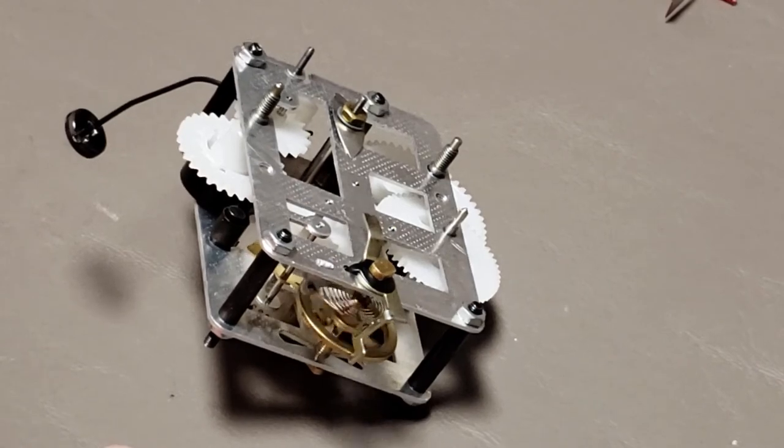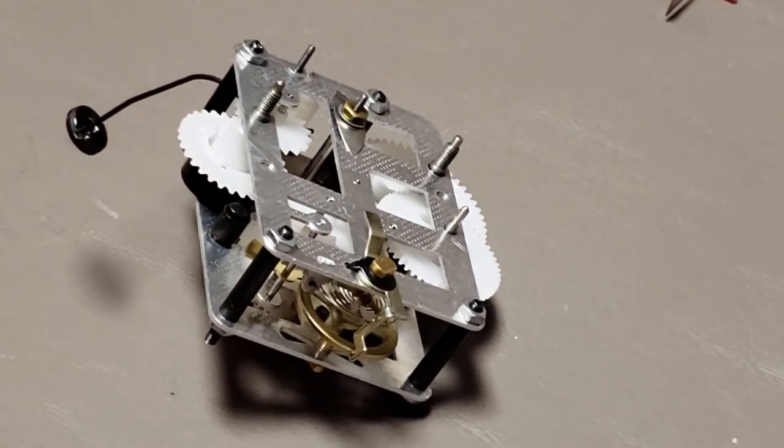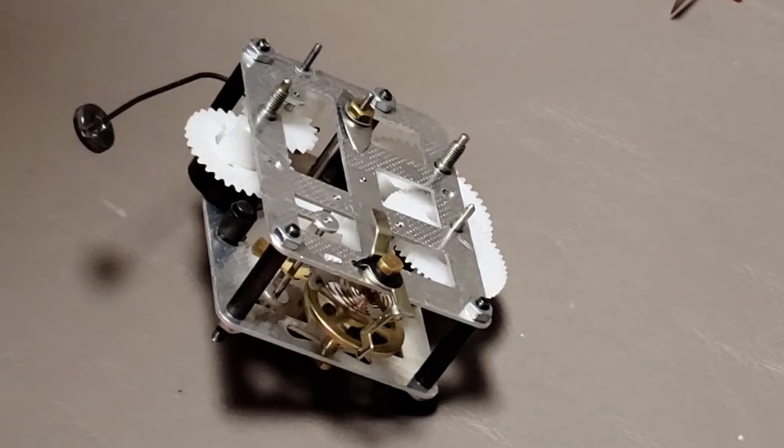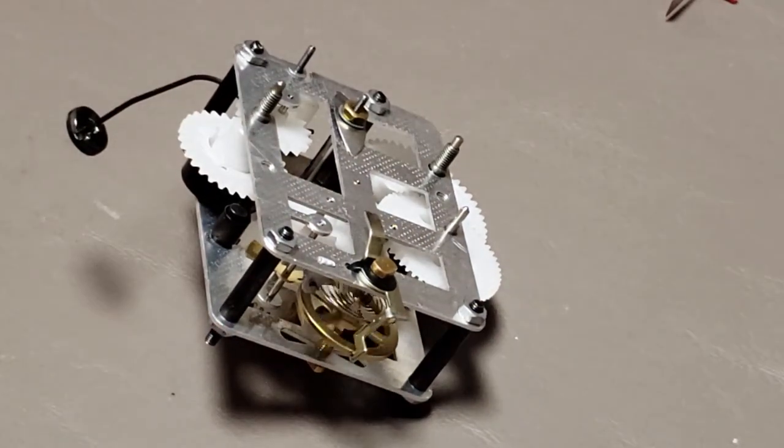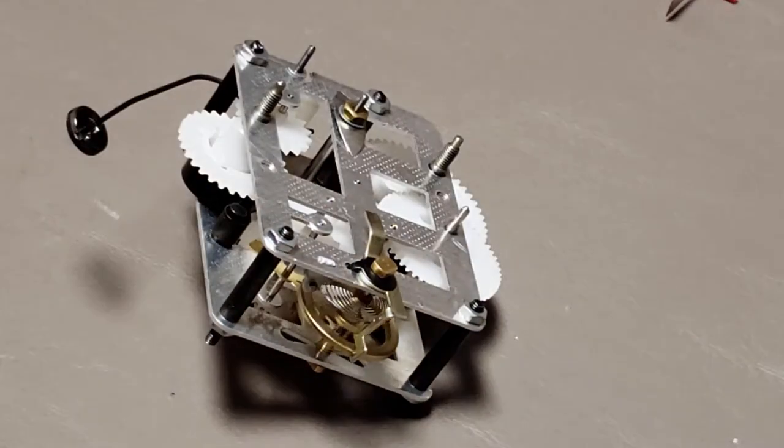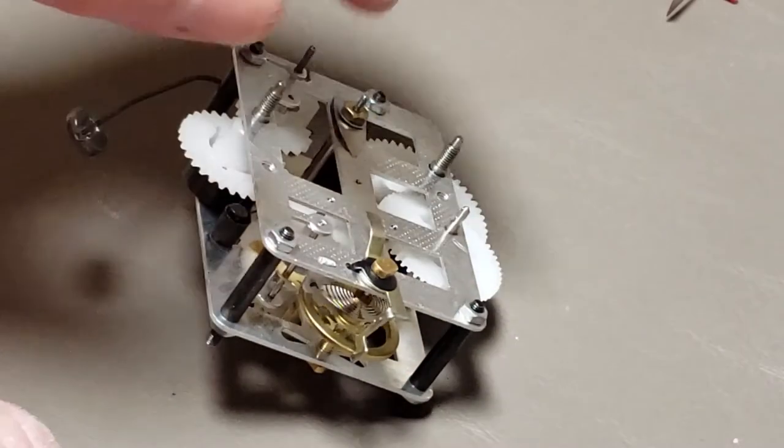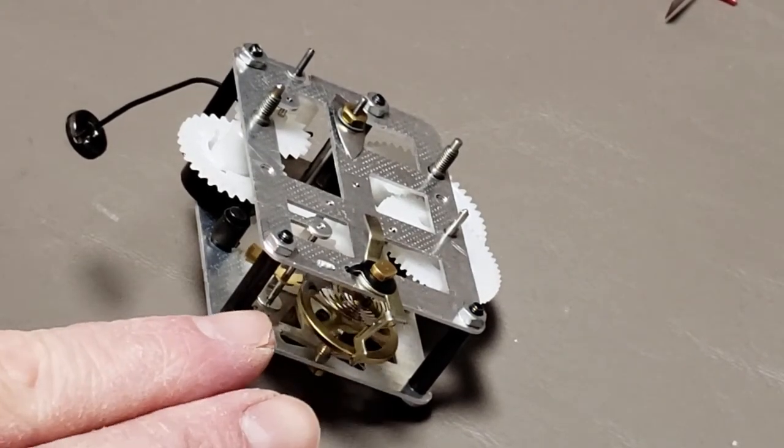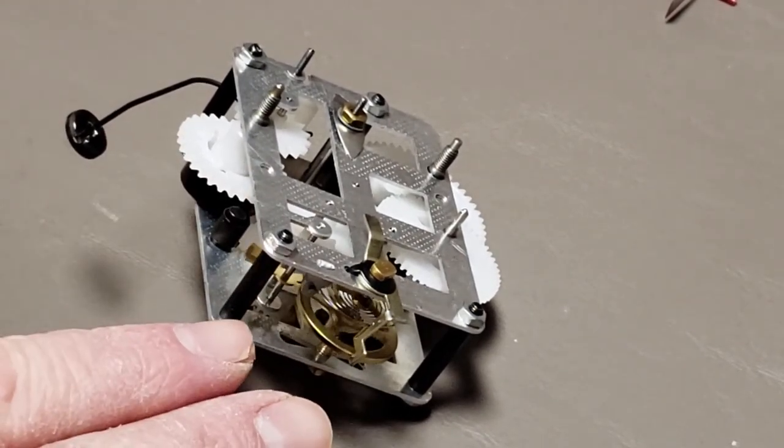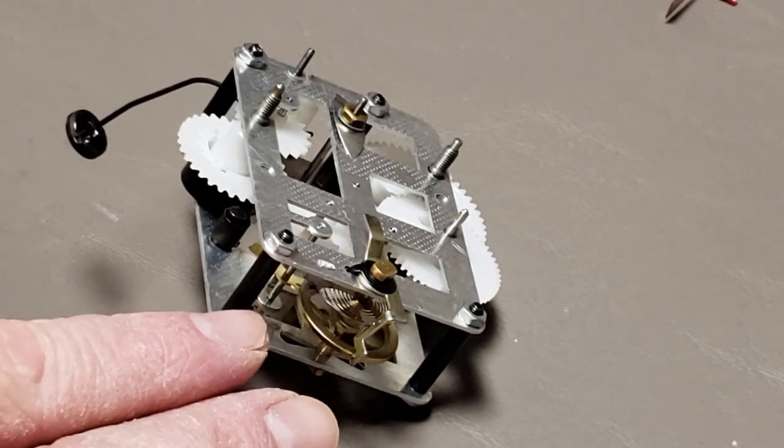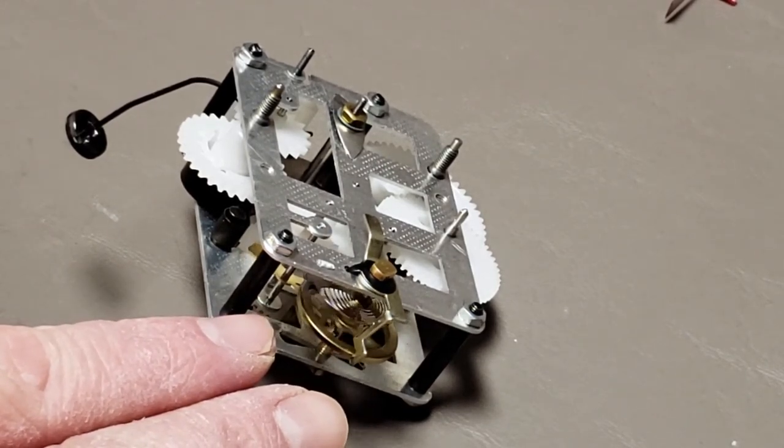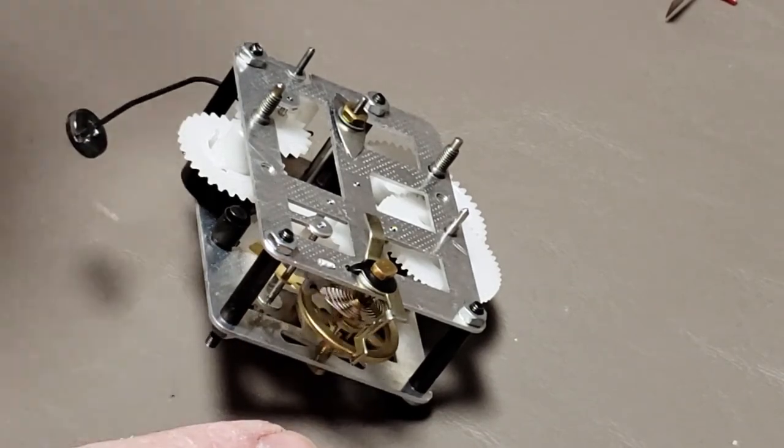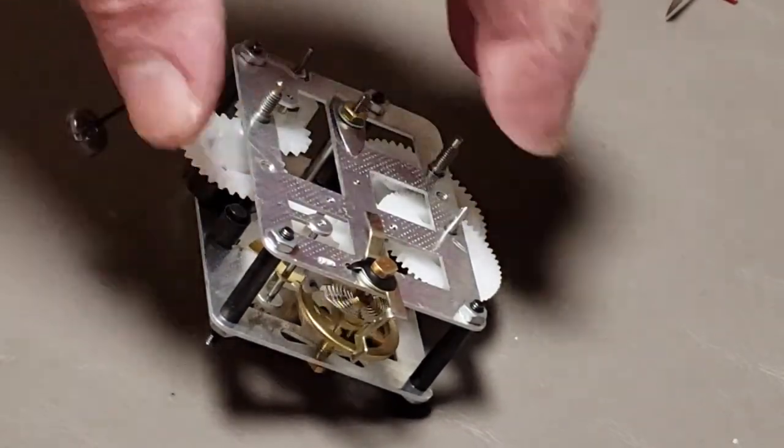First of all, it changed the period of the balance wheel to something a lot closer to the 0.6 seconds that I calculated it should have to keep good time. That's one thing it did. Another thing it did is it gave enough spring so that the hairspring wasn't bunched up. And then a third thing, a third result of giving that hairspring more spring to work with, is that the balance wheel now has a throw of much larger than 180 degrees.